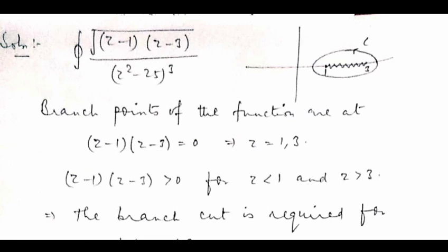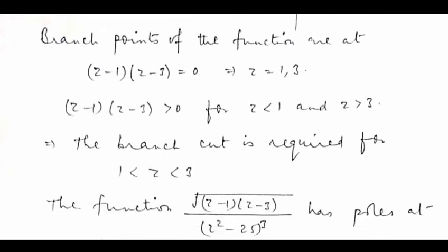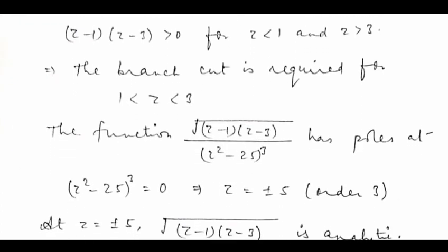Since z equals 1 and z equals 3 are branch points, to evaluate the integral you have to take a branch cut from z equals 1 to z equals 3, which is actually shown in the question as well.